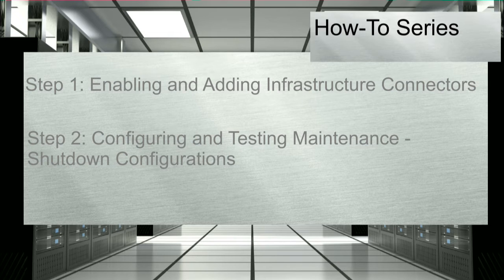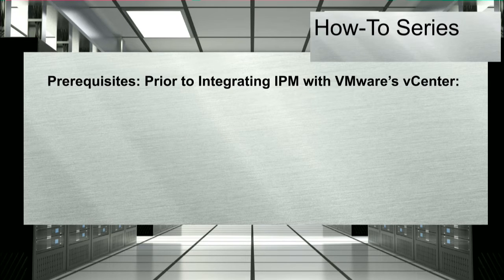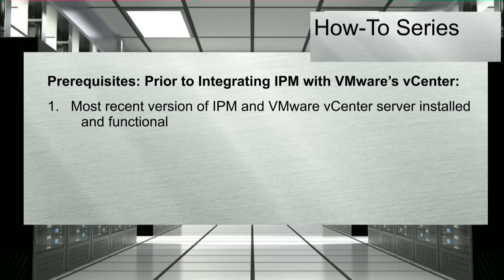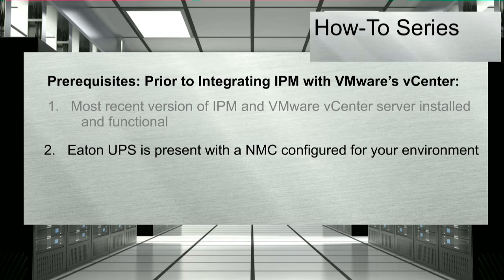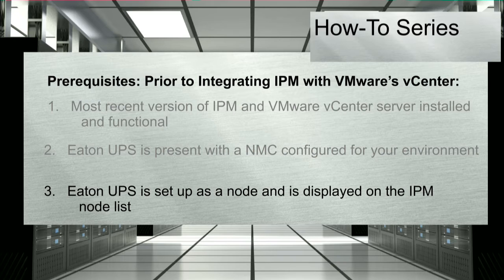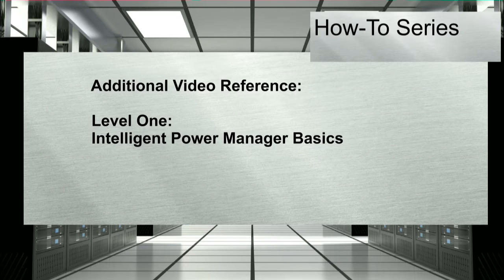Before we begin, ensure that you have the following prerequisites complete. Most recent versions of IPM and VMware vCenter server installed and functional. Eaton UPS is present with a network interface card configured for your environment. Eaton UPS is set up as a node and displayed on the IPM node list. If you have any questions concerning IPM setup or installation, refer to the video entitled Intelligent Power Manager Basics.